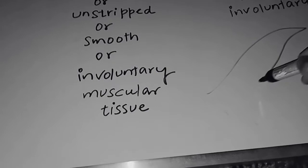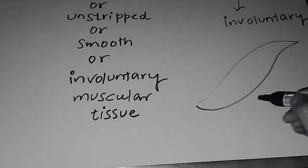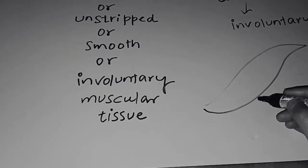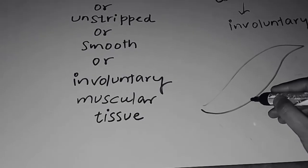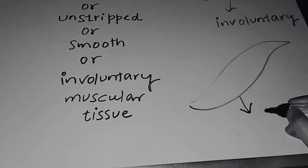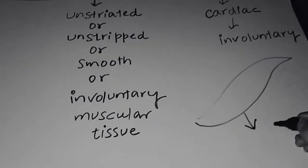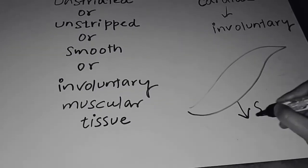Obviously each and every cell is surrounded by a membrane which is called the cell membrane. Here we have a particular name that we call it sarcolemma.